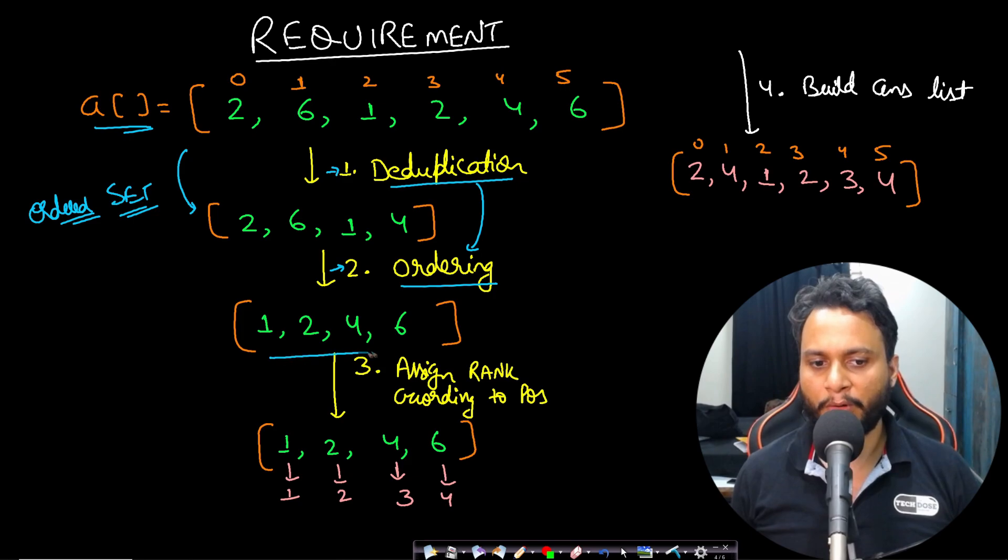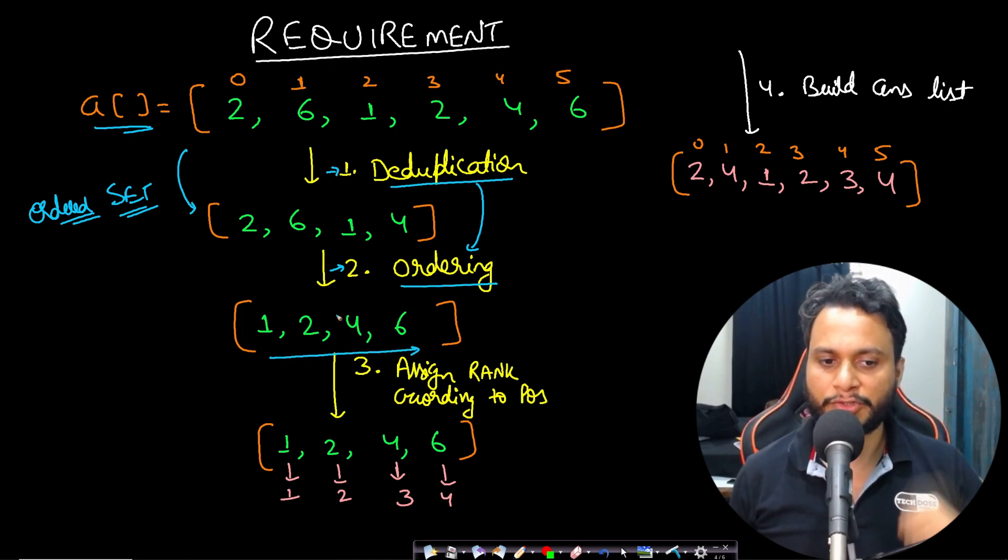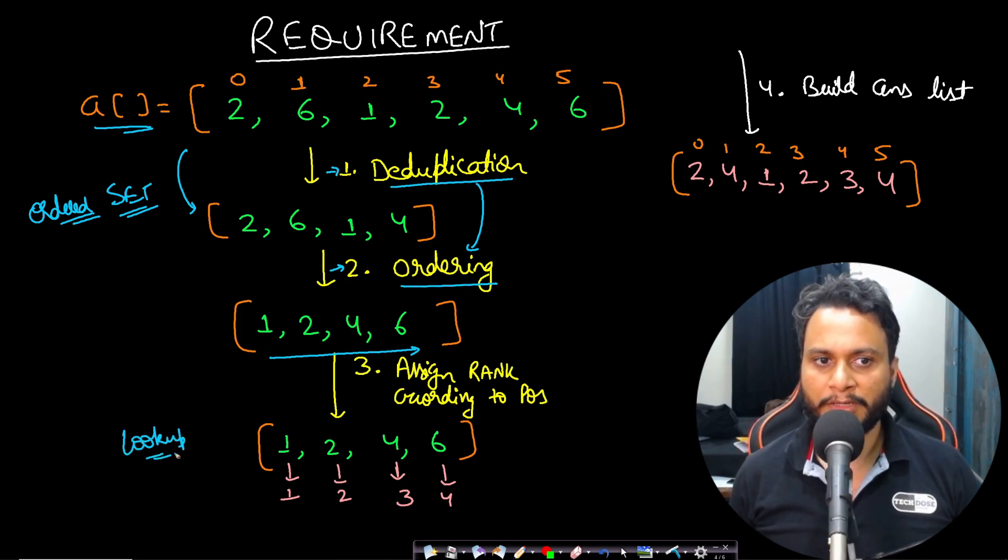Now once you have got an ordered item set, then what we need is we need to associate rank for each of the item in such a way that we want to perform lookup now. So that if I say two, then I should get the rank of two, that means the position of two exactly in one time.